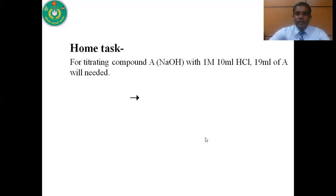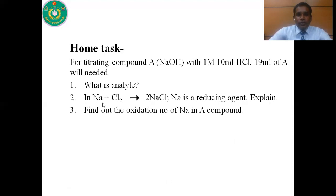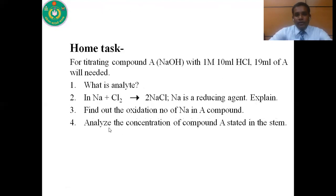The CQ question: for titrating compound A — that means sodium hydroxide — with 1 molar 10 ml hydrochloric acid, 90 ml of A will be needed. Based on this stem: question one — what is analyte? (knowledge-based question). Question two — when sodium and chlorine react to form sodium chloride, sodium is a reducing agent. Explain it. (comprehension-type question). Question three — find out the oxidation number of sodium in compound A. (application-type question). Question four — analyze the concentration of compound A stated in the stem. (higher-order type question).